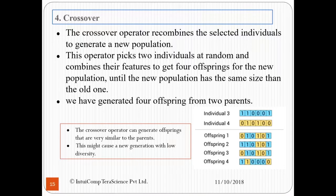Now let us discuss what crossover is. Crossover is a genetic operator which recombines the selected individuals to generate a new population member. This operator picks two individuals at random and combines their features to get four offsprings for the new population until the new population has the same size as the old one. We have generated four offsprings from two parents. We here see that individual three and four are taken as parents and offsprings one, two, three, and four are generated.